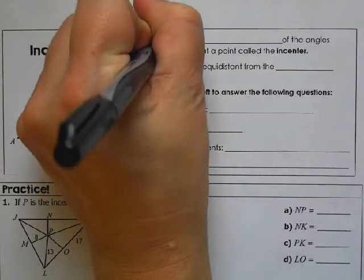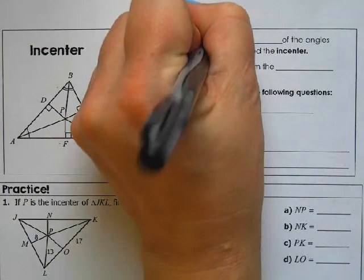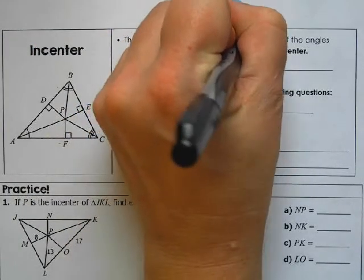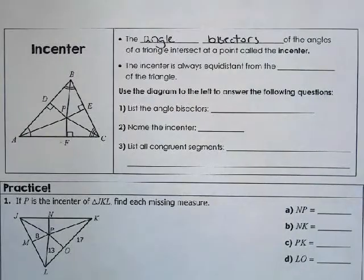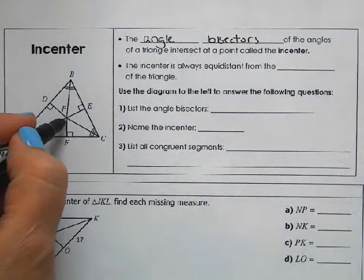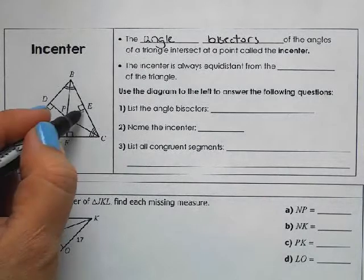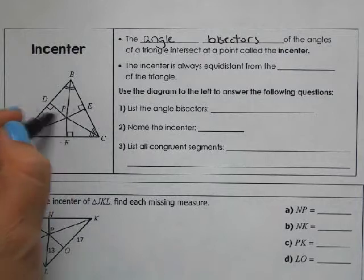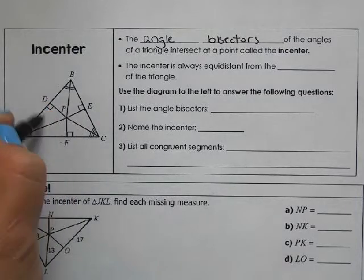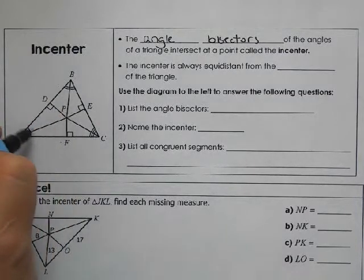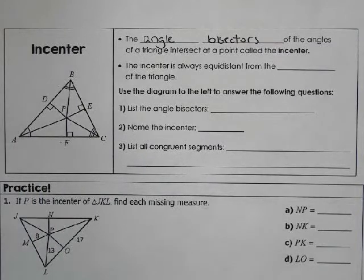So the angle bisectors meet at a point called the incenter. And what you can do with that that's really cool is you would take a compass and open it up to this point here, and you can inscribe a circle inside the triangle. That's why it's called an incenter.